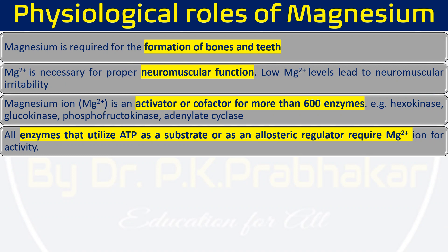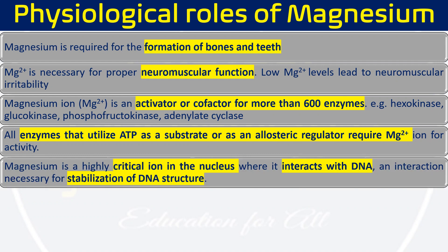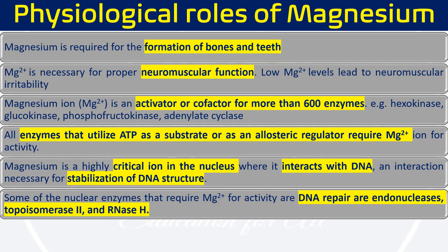Almost all enzymes that use ATP as a substrate or cofactor, or as allosteric regulators, require magnesium ion for their activity. Magnesium is also a highly critical element in the nucleus, where it interacts with DNA to establish its structure, providing DNA stability. Nuclear enzymes that also require magnesium are involved in DNA repair systems, including different endonucleases, topoisomerase 2, and RNase H, which degrades RNA.